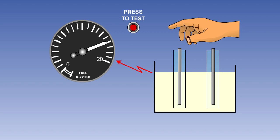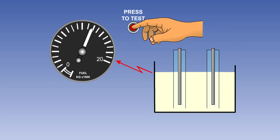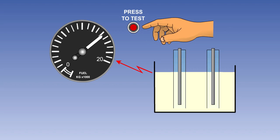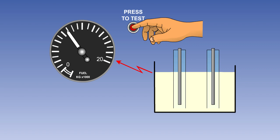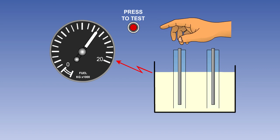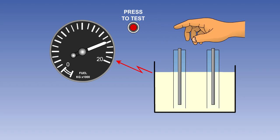Some systems also incorporate a test switch, utilizing the failsafe circuit. When the test switch is operated, the indication moves towards empty and when the switch is released, the pointer should move back to its original position.